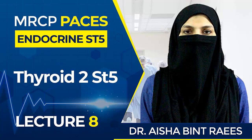For proptosis, you look from the sides and the eyeball will be protruded out. There can also be ophthalmoplegia — usually complex ophthalmoplegia in Graves ophthalmopathy — where the patient will have diplopia in multiple directions. Initially it is due to inferior rectus muscle involvement, and patients have diplopia on upward gaze, but can have diplopia in multiple directions.